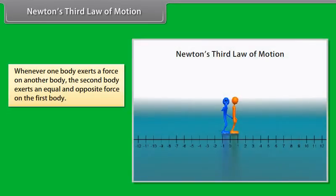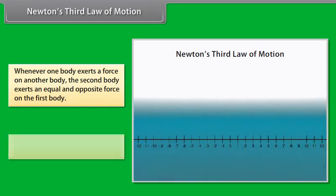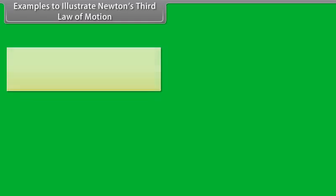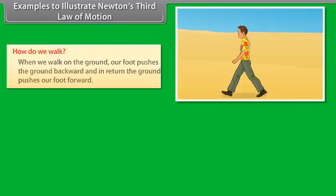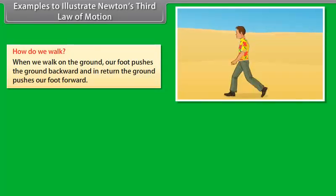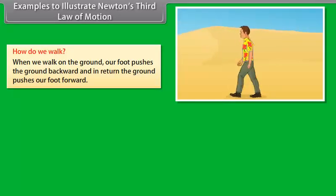Newton's third law of motion: Whenever one body exerts a force on another body, the second body exerts an equal and opposite force on the first body. Every action has equal and opposite reaction. How do we walk? When we walk on the ground, our foot pushes the ground backward and in return the ground pushes our foot forward.